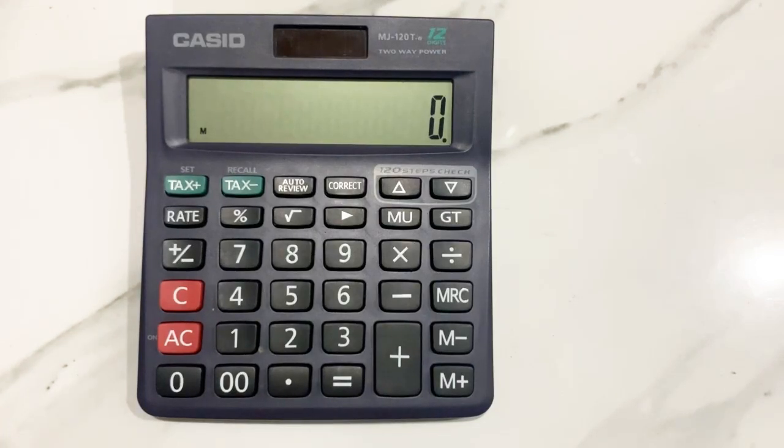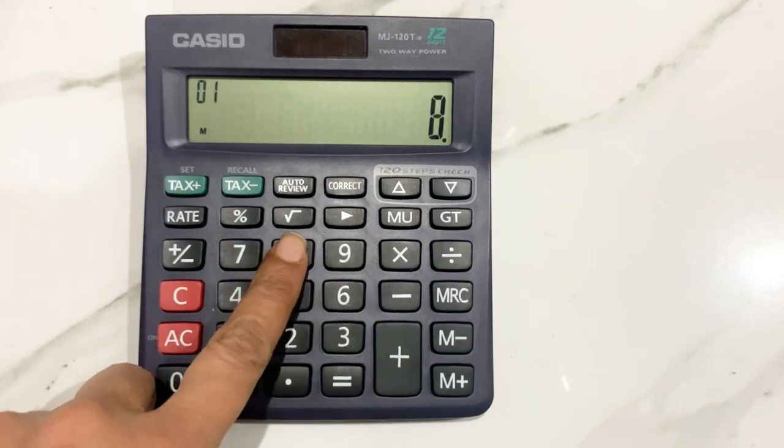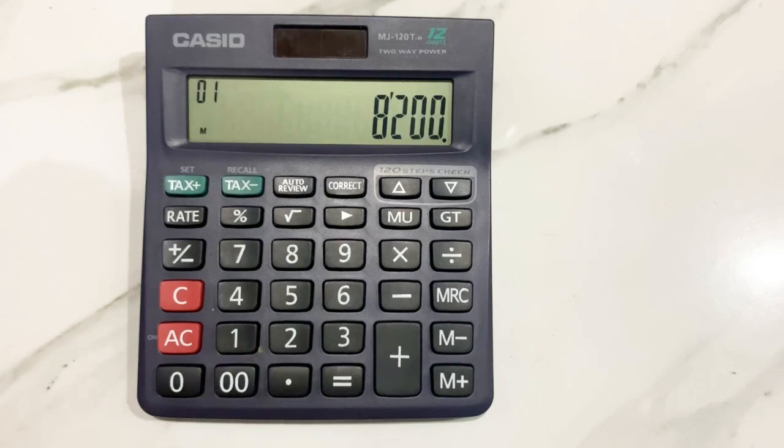Hello guys, I hope you all are doing well. In today's video I'm going to show you how to calculate 12% off any price using your calculator. So let's start. For example, we have an item and the price of that item is 8200. You want to know the final price after 12% off.